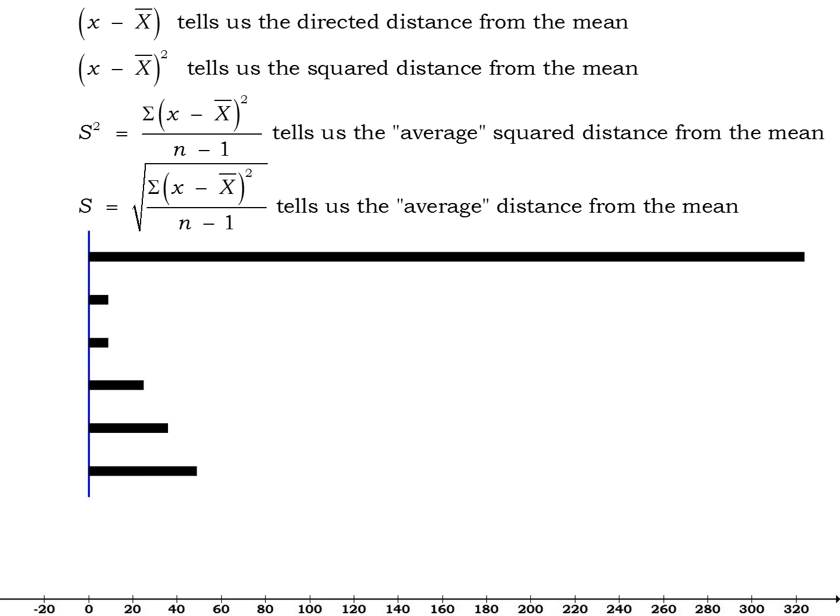In that, we calculate the distance from the mean for each value, add them up and divide by how many values you had. So instead, s is called our sample standard deviation.